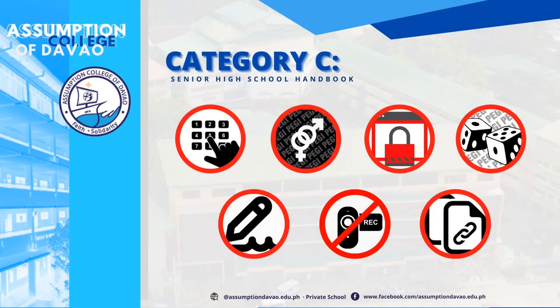For Category C, Number 1: Engaging in unauthorized transactions that may incur a cost to the school or initiate unwanted internet services and transmissions. Number 2: Participating in the viewing or exchange of pornography or obscene materials. Number 3: Refusing to cooperate with a security investigation. Number 4: Using the education portal for political causes or activities, religious activities, or any sort of gambling. Number 5: Sending anonymous email messages. Number 6: Cheating and/or plagiarism. Number 7: Disturbing the virtual learning environment by annotating the visual presentations of the teacher. Number 8: Recording your teacher and/or classmates without permission.